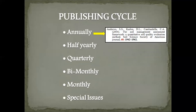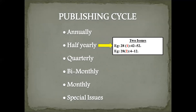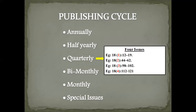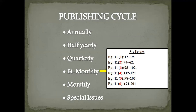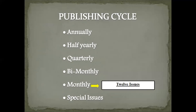If the publication cycle is only once a year, there will be no number in parentheses after the volume — it goes directly to the page numbers. If published twice a year, the numbers in parentheses will be one and two. If published quarterly — four times a year — there will be four different issues. If the publishing cycle is bi-monthly, the journal publishes six issues per year, numbered one through six.